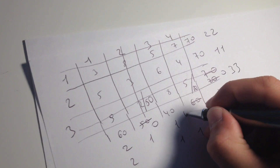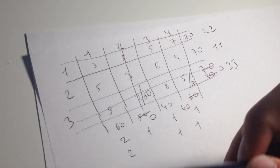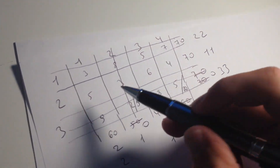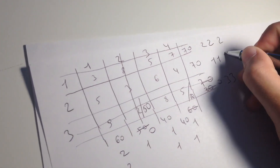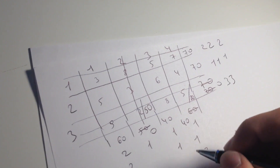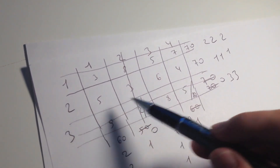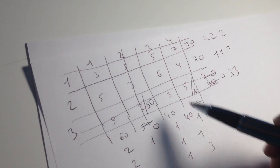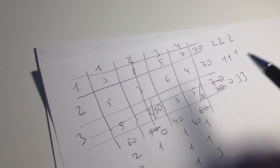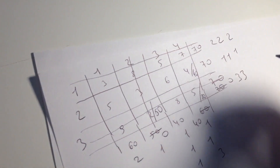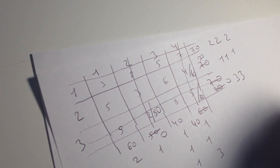Here we still have 40 goods we have to transport to satisfy this client. Now we have to find again the penalties. We still have two, we still have one, we still have three, here one, here two, here three. We have to use column four. We find the lowest element and it's four. We use this one. We put here 40. Here we still have 30. We don't use this column anymore.